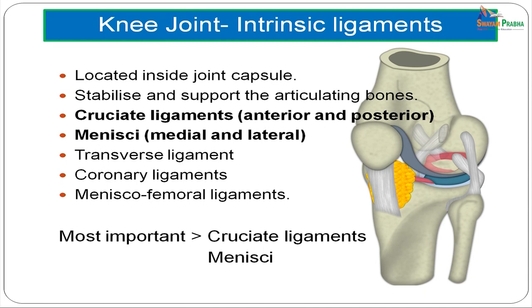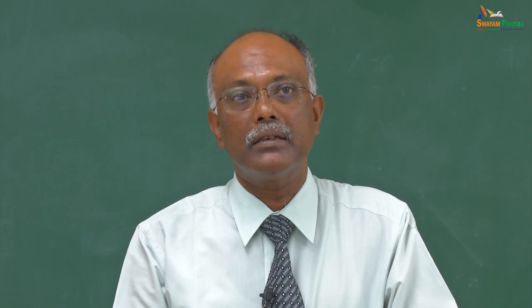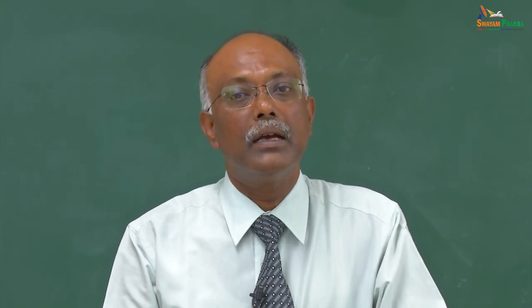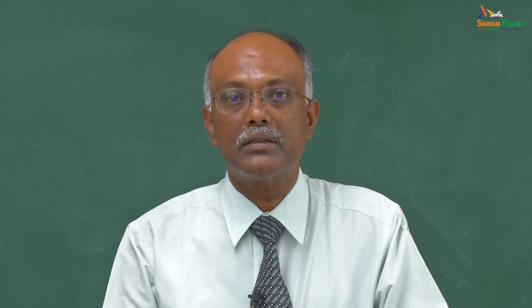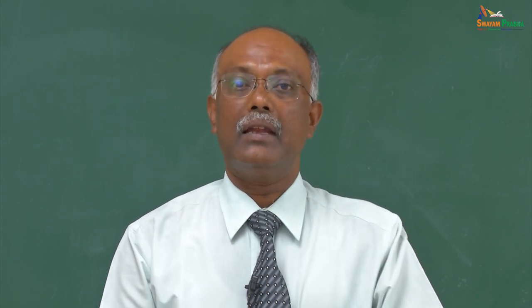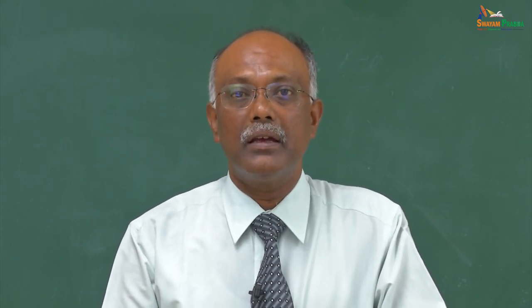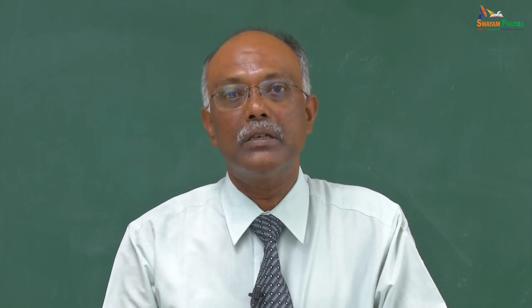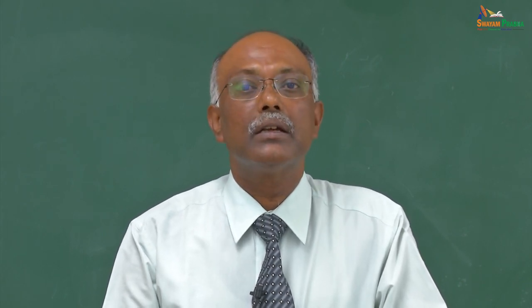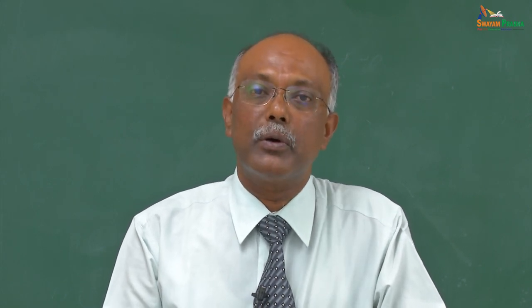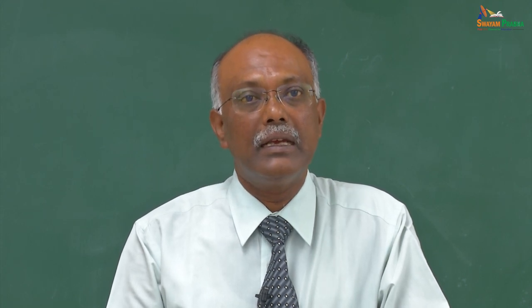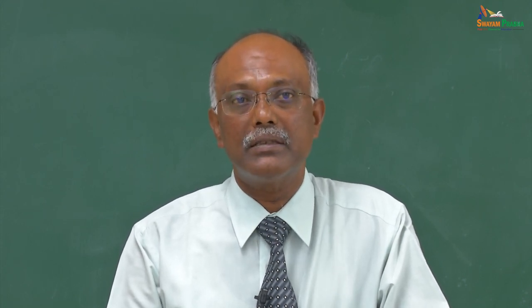Now we look at the intrinsic ligaments of the knee joint. These are located inside the joint capsule and stabilize and support the articulating bones. The two most important intrinsic ligaments are the cruciate ligaments and the menisci. Additional intrinsic ligaments include the transverse ligament, the coronary ligaments, and the meniscofemoral ligaments. By far the most important for knee stability are the cruciate ligaments and the menisci.